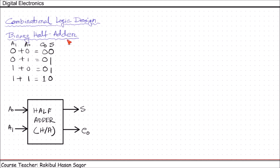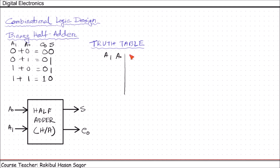I'll show you what a previous carry is when we design the full adder. Next, let us construct the truth table for the half adder. We have two inputs A0 and A1, and on the output side we have carry out and sum. Using two inputs, we can have four combinations: 0 0, 0 1, 1 0, and 1 1.